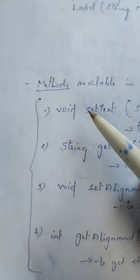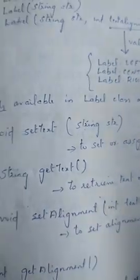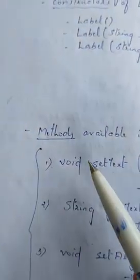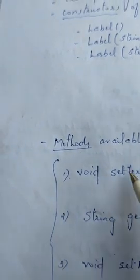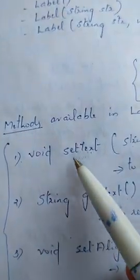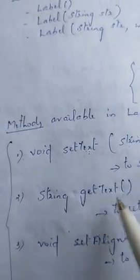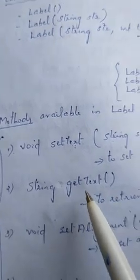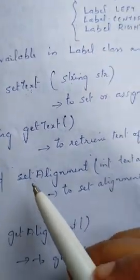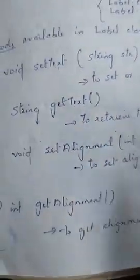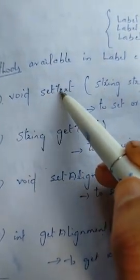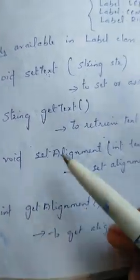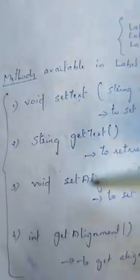Now let's see how you can use this method. Set text, get text, set alignment, get alignment — we have 4 methods in the label. The method names use two words, with the first character capital: T capital, A capital — for example, setText, getText, setAlignment, getAlignment.